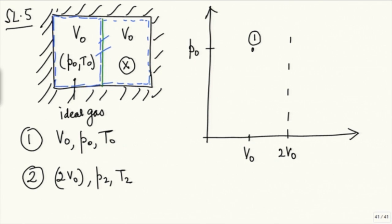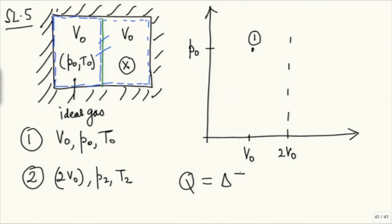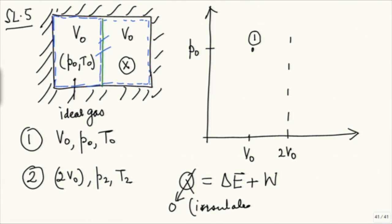Applying the first law: Q = ΔE + W. Since the system is insulated, Q = 0. There is no stirrer and no electrical connection, so any work would be expansion work only. But the gas is expanding freely — there is no piston or surrounding system against which it does work.